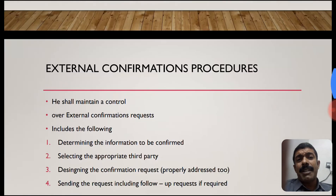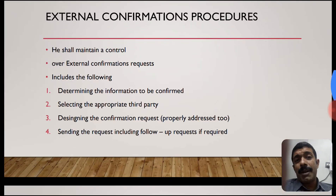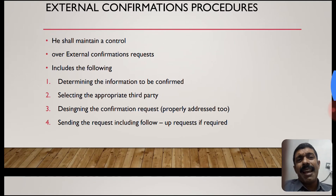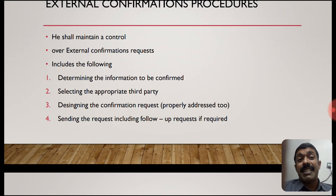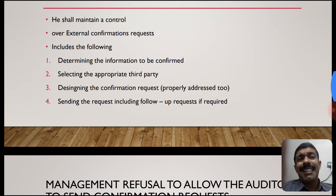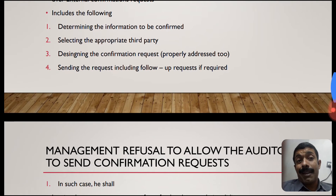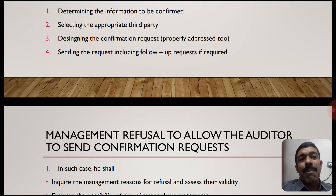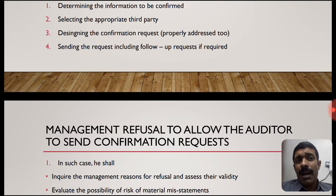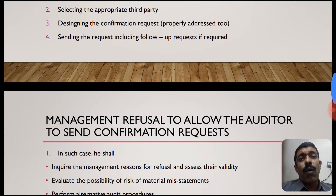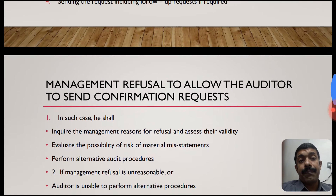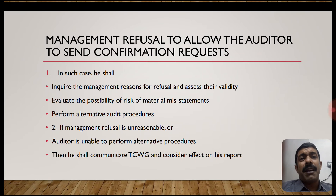External confirmation procedure - what are the procedures and how are they done? The auditor shall maintain control over external confirmation requests, which includes: determining the information to be confirmed (i.e., the amount based on materiality), selecting an appropriate third party who is not connected with the organization in any manner, designing the confirmation request, and properly addressing and sending it in a prepaid envelope, including follow-up requests if necessary.